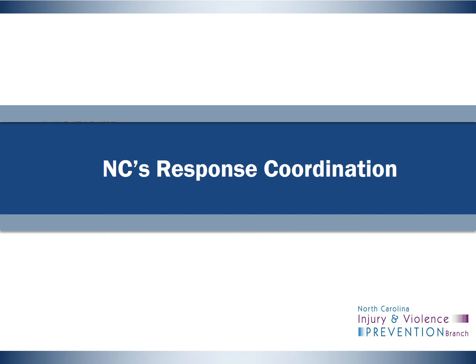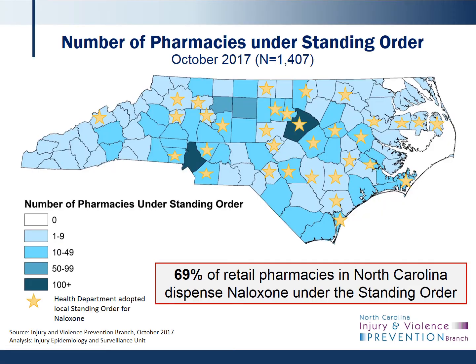The next series of slides will briefly touch on just some of the work happening across North Carolina in response to the overdose epidemic. People who are at risk of experiencing opioid-related overdose, or a family member or friend of such a person, can request naloxone — the opioid overdose reversal drug — at a pharmacy dispensing under the North Carolina State Health Director standing order. Naloxone is available by standing order from over 1,400 pharmacies in North Carolina, which accounts for 69% of retail pharmacies in the state. Over 30 health departments in North Carolina have adopted a local standing order for naloxone. You can visit www.naloxonesaves.org to find naloxone near you.